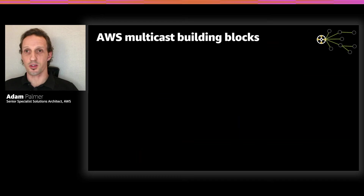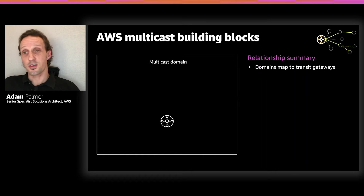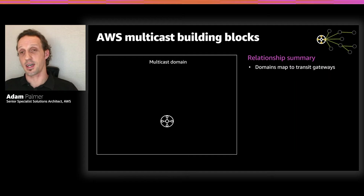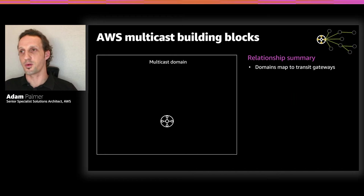So what are the multicast building blocks on AWS? The first thing is that we need Transit Gateway. You create a Transit Gateway and must enable it for multicast — this isn't something you can do retrospectively. Once you've done that, you attach a VPC as you would normally for unicast forwarding. At that point, you're ready to start your multicast build. The first thing you create is a multicast domain, which is a holding context for all the rest of the configuration you're going to deploy. You create your multicast domain and map it to a Transit Gateway.